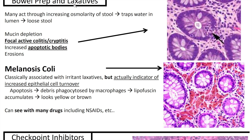Next up we've got bowel prep and laxatives. Many act through increasing osmolarity of the stool, which traps water in the lumen, leading to loose stool. Histologically you'll get mucin depletion, focal active colitis or cryptitis, increased apoptotic bodies, and erosions. Melanosis coli is classically associated with irritant laxatives but is actually an indicator of increased epithelial cell turnover. Apoptosis leads to debris phagocytized by macrophages, leading to lipofuscin accumulation that looks yellow or brown — this can be seen with many drugs including NSAIDs.